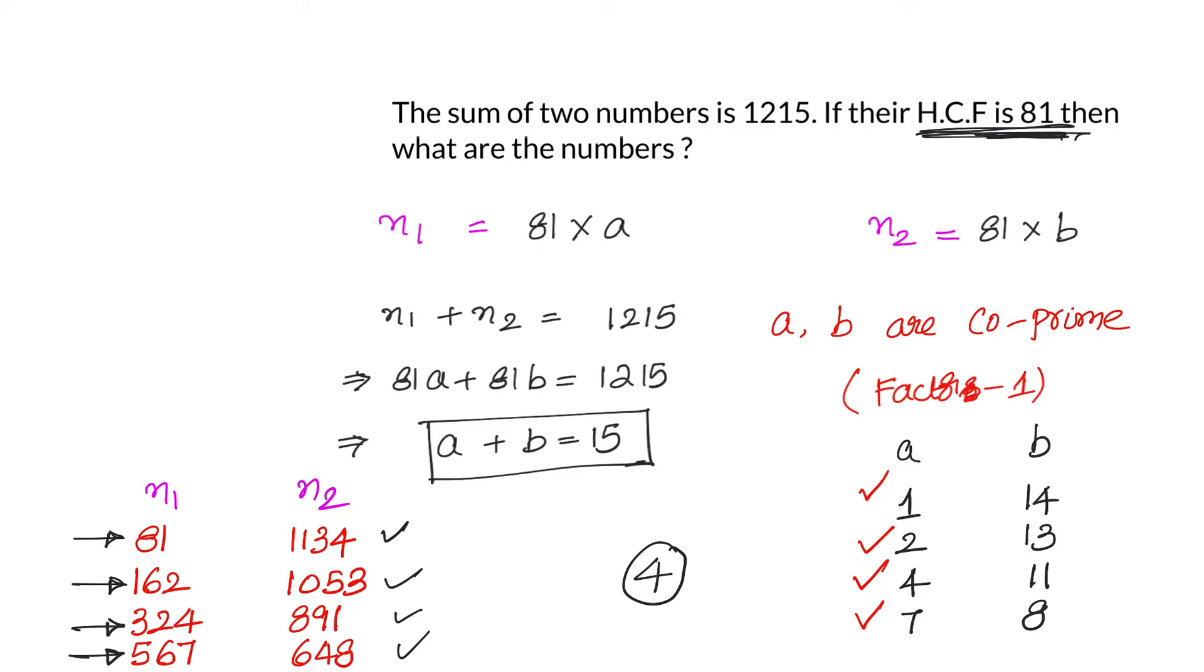Now I cannot take all the values of natural numbers which will satisfy a plus b equals to 15 for a and b, because we have to also make sure that a and b are co-prime. That means they don't have any factors other than 1. In that scenario only our HCF will be intact as 81. If we are taking like a equals to 3, b equals to 12, that means HCF is now becoming 81 into 3, 243. So this is very important that we have to understand a and b are co-prime.